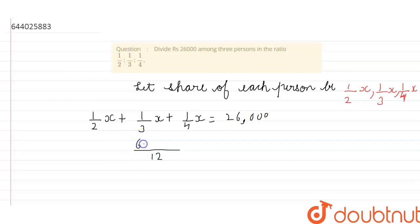So, 6x plus 4x plus 3x upon 12 is equal to 26,000. And if we add it, it will be 13x upon 12 is equal to 26,000.